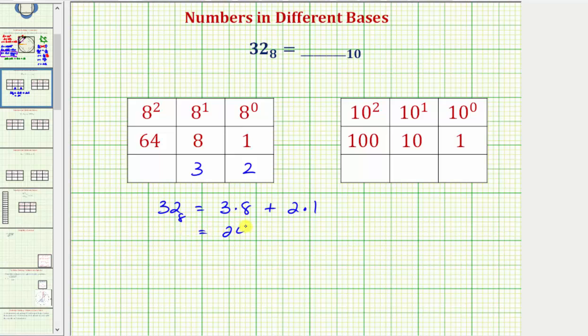Well, three times eight is equal to 24. Two times one is equal to two, which is equal to 26.